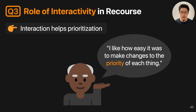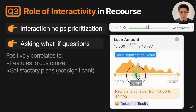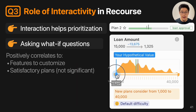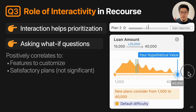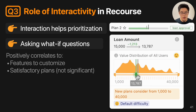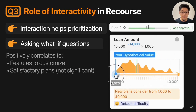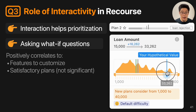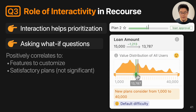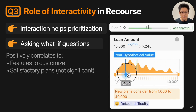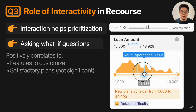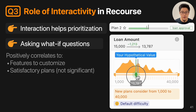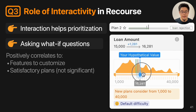We then studied the role of interactivity in recourse. In general, we found that interaction helps prioritization — one participant mentioned, 'I like how easy it was to make changes to the priority of different things.' Also, in GankCoach users can ask what-if questions to see the effects of changing one particular feature on the model prediction. By analyzing the logs, we found that participants who asked what-if questions were more likely to optimize that feature, which was statistically significant. They were also more likely to choose satisfactory plans using the features they had asked what-if questions about, even though that second finding was not statistically significant.